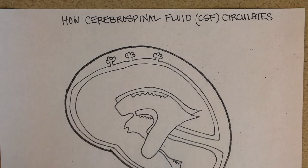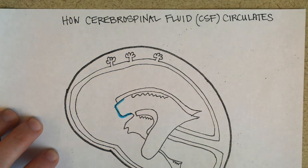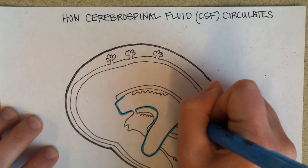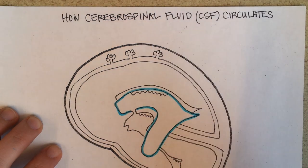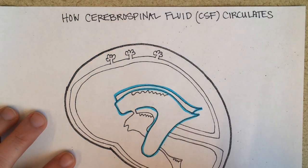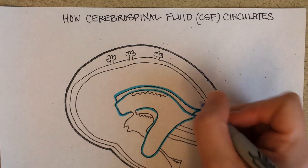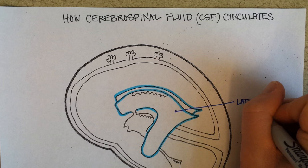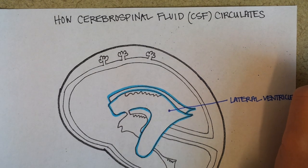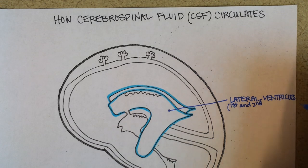First, let's outline the lateral ventricles in blue — try to follow along with me if you can. So that's one lateral ventricle, and then behind it you can see a hint of the right lateral ventricle. We always call them lateral ventricles, but you can also think of them as the first and second ventricles, and you'll see why that's helpful in a second.